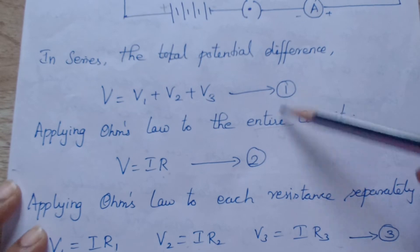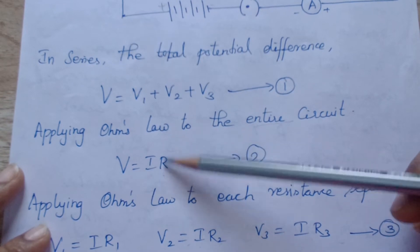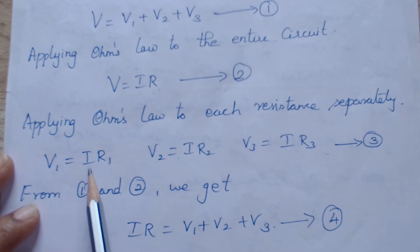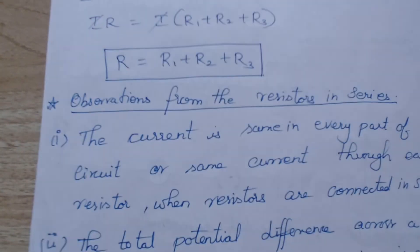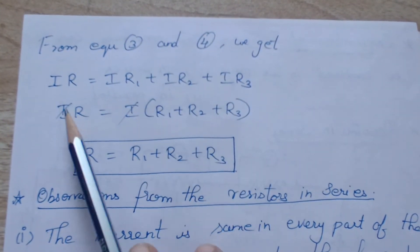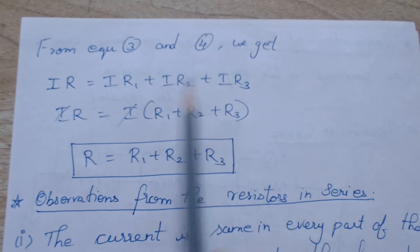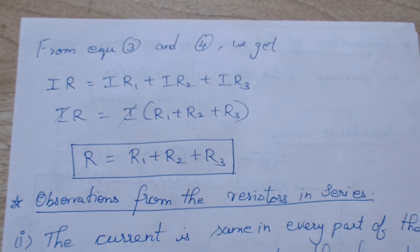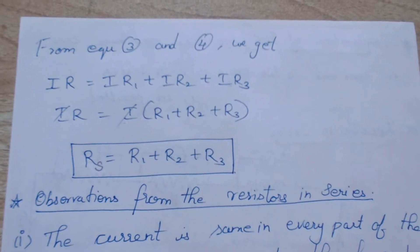From equations 1 and 2, we can write this out. Both left-hand sides are V, so we equate the right-hand sides: IR equals V1 plus V2 plus V3. Substituting V1 equals IR1, V2 equals IR2, V3 equals IR3, we get IR equals IR1 plus IR2 plus IR3. Since I is common, we cancel it out, giving R equals R1 plus R2 plus R3. This is the equivalent resistance Rs when connected in series — instead of three resistors, we can use a single equivalent resistor.